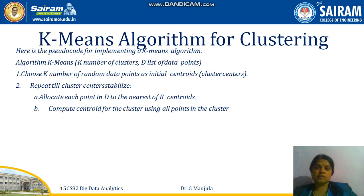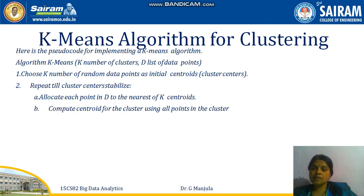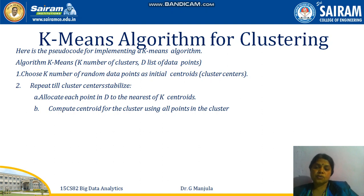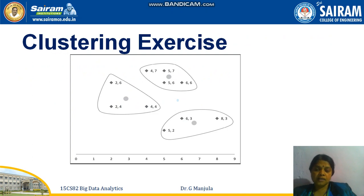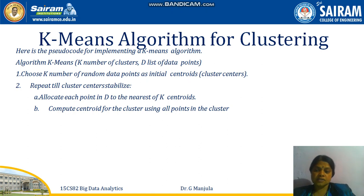Next we learn about the K-means algorithm for clustering in machine learning. The pseudo code for K-means: k is the number of clusters, and d is the list of data points. Choose k random data points as the initial centroids. Repeat until the clusters stabilize — allocate each point to the nearest of the k centroids, then compute new centroids. Similar to before, we identify data, scatter it, and group similar data together into k clusters.